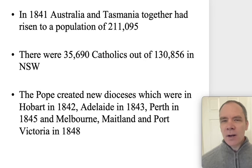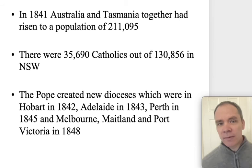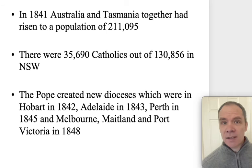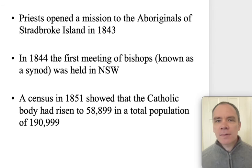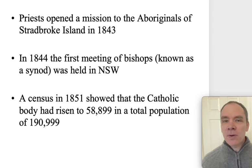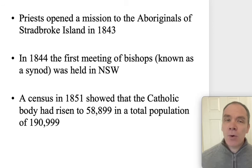In 1841, Australia and Tasmania together had risen to a population of about 211,000, with 35,000 Catholics out of approximately 130,000 people in New South Wales. The Pope created new dioceses: Hobart in 1842, Adelaide in 1843, Perth in 1845, and Melbourne, Maitland and Port Victoria in 1848. Priests opened a mission for Aboriginals at Stradbroke Island in 1843. In 1844, the first meeting of bishops known as the Synod was held in New South Wales. A census in 1851 showed the Catholic body had risen to about 59,000 of the total population of 191,000.